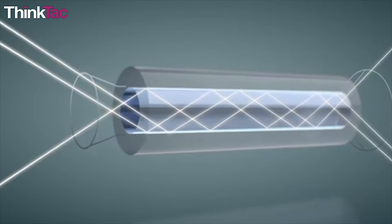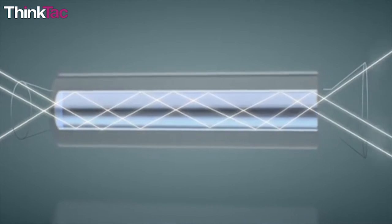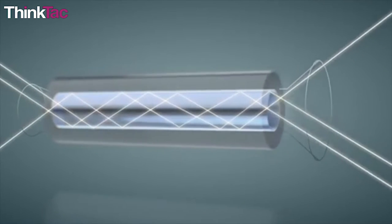Light travels inside an optic fiber at about two thirds of its speed in vacuum because the material has a refractive index of 1.5.